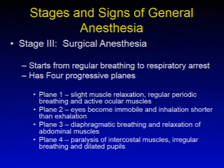Stage three is surgical anesthesia. This stage starts from regular breathing to respiratory rest and has four progressive planes. In the first plane, there's slight muscle relaxation, regular periodic breathing, and active ocular muscles. In plane two, the eyes become immobile and inhalation is shorter than exhalation. By plane three, you have diaphragmatic breathing and relaxation of the abdominal muscles. In plane four, paralysis of intercostal muscles, irregular breathing, and dilated pupils.